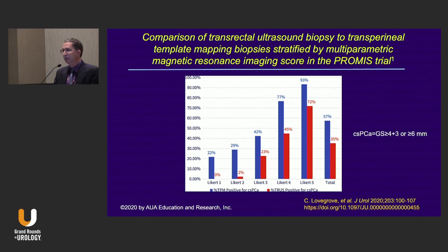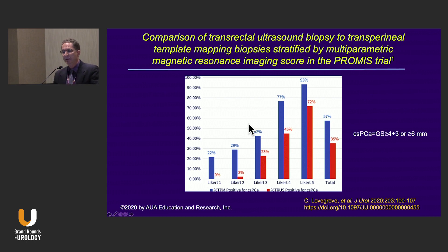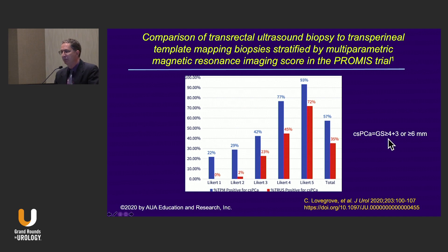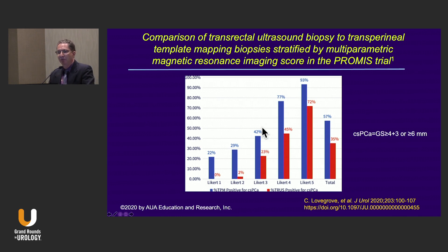This has been looked at prospectively in the PROMIS trial, which has been mentioned a couple of times today. The PROMIS trial showed that looking for clinically significant cancer defined as Gleason 4+3 or extensive tumor on needle biopsy, template-guided biopsy outperformed systematic biopsies in every area of Likert score.